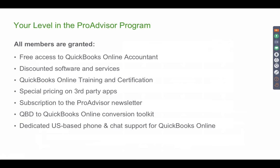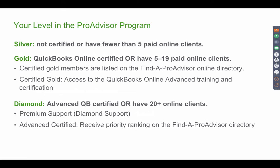All ProAdvisors get dedicated support — make sure you get certified to access that. You'll have free QuickBooks Online Accountant access, a free account for your own books, access to resources, conversion tools, additional training certifications, and special pricing on third-party apps. To get dedicated support, you need to be a Gold member, meaning you're certified. At that level, you also get listed in the ProAdvisor directory so clients can find you. With more than 20 clients or Advanced Certification, you get premium support and priority ranking in the directory.